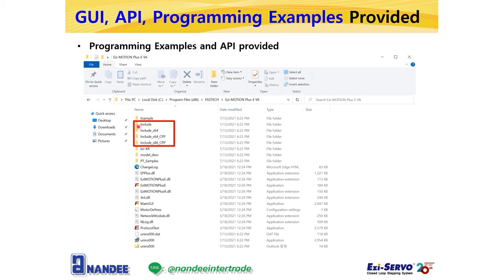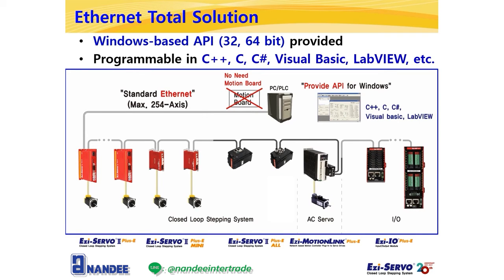For reference, the 32-bit API of C# is in the Include folder, the 64-bit API of C# is in the Include_X64 folder, and the 64-bit API of C++ is also in the Include_X64 folder. In summary, in the case of a single application — especially a small device — Fastec's Ethernet products have a built-in motion controller, so a motion board is unnecessary. Using a standard Ethernet network, you can configure and control the entire machine through one Ethernet network, including stepping motors, servo motors, and digital I/O modules. This is the meaning of the total solution we aim for.